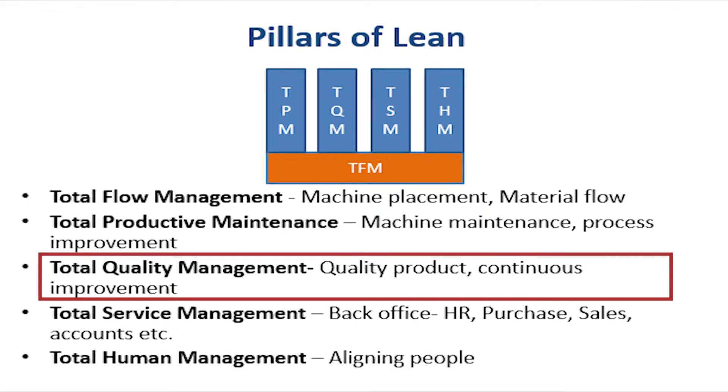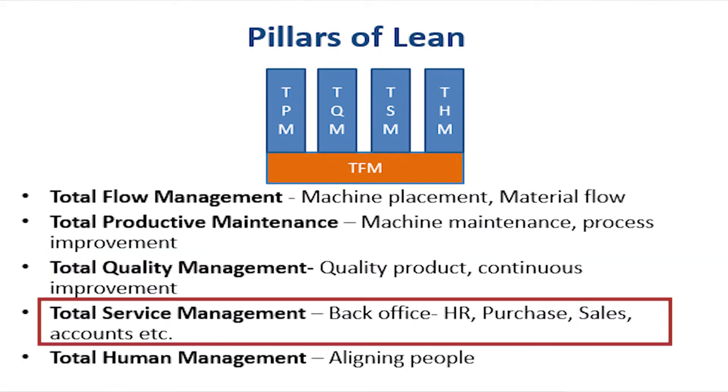The five pillars are Total Flow Management, known as TFM; Total Productive Maintenance, known as TPM; Total Quality Management, known as TQM; Total Service Management, known as TSM; and finally Total Human Management, known as THM.